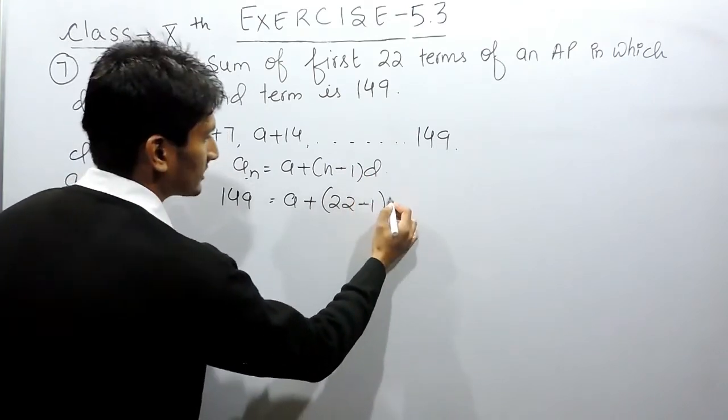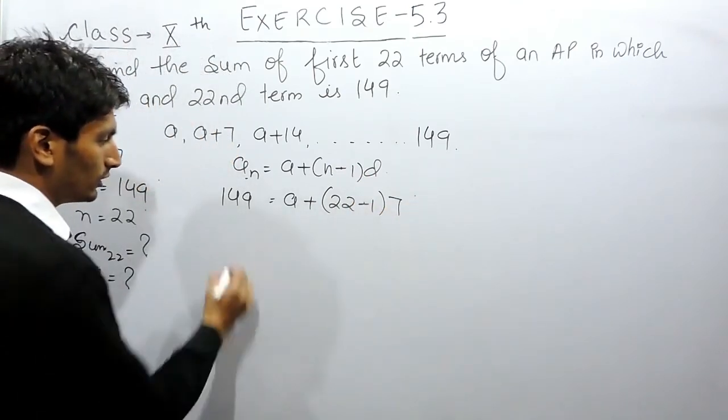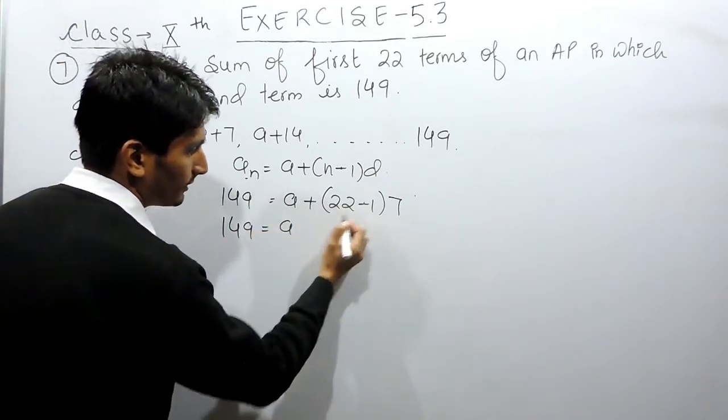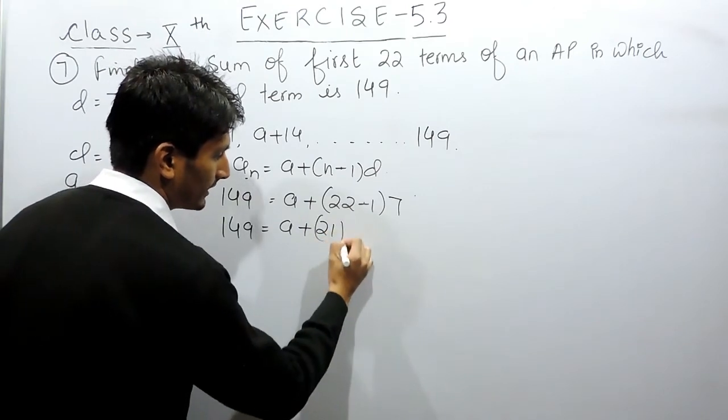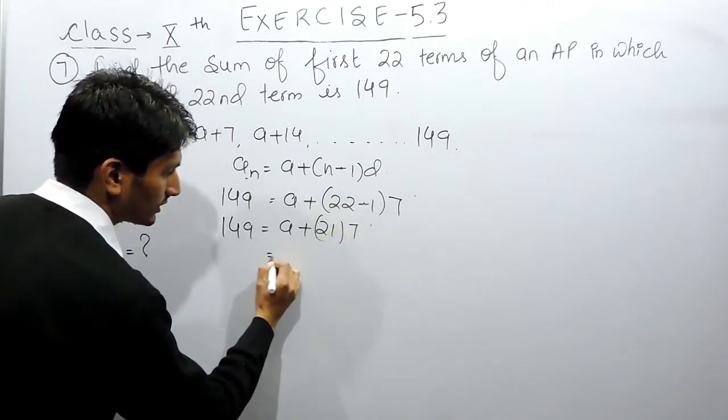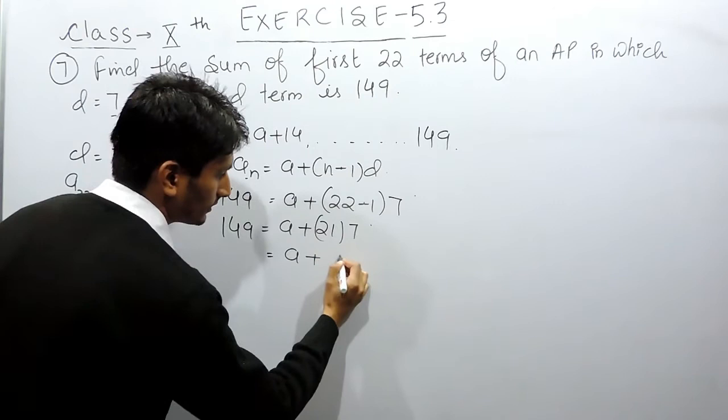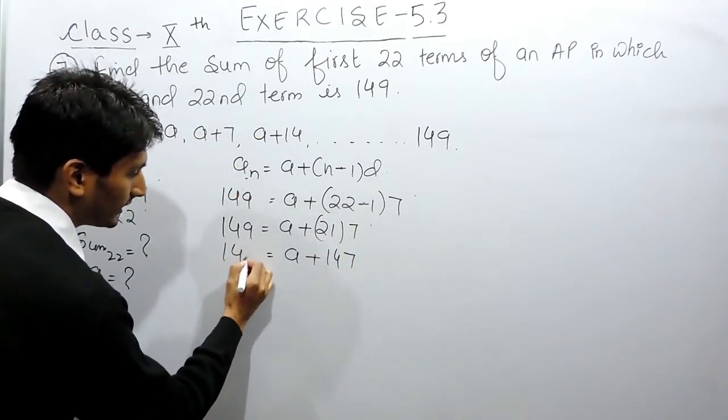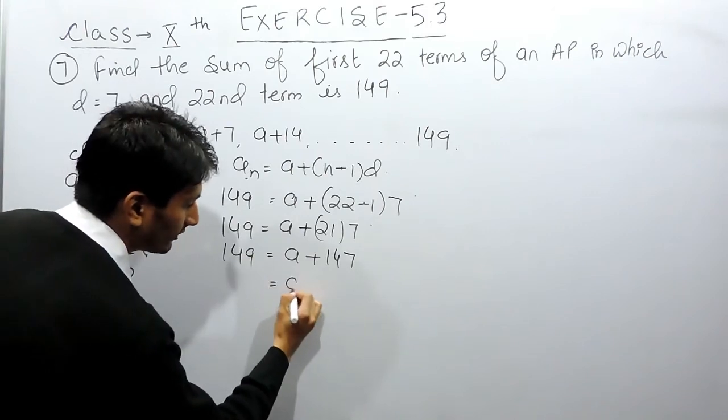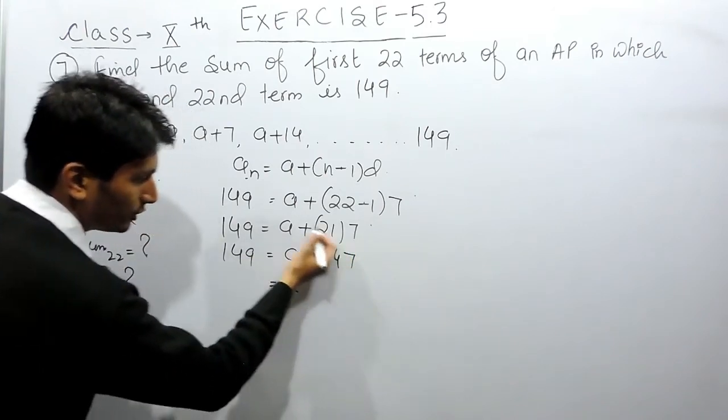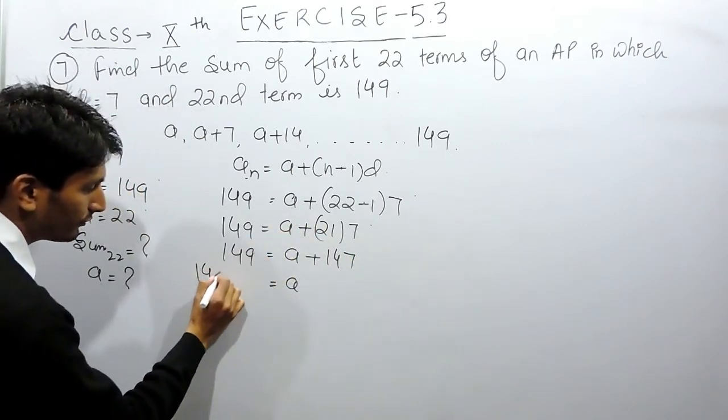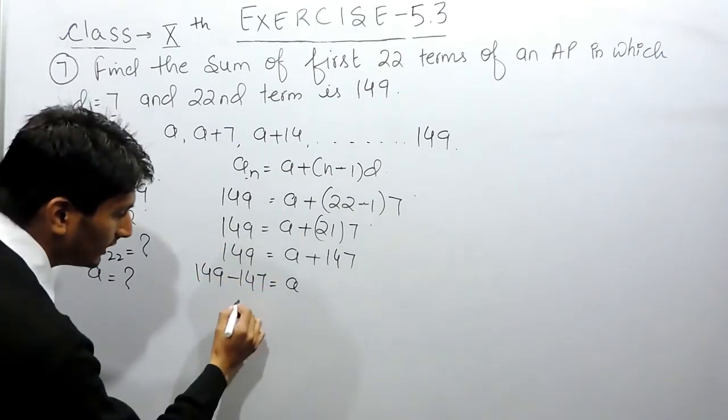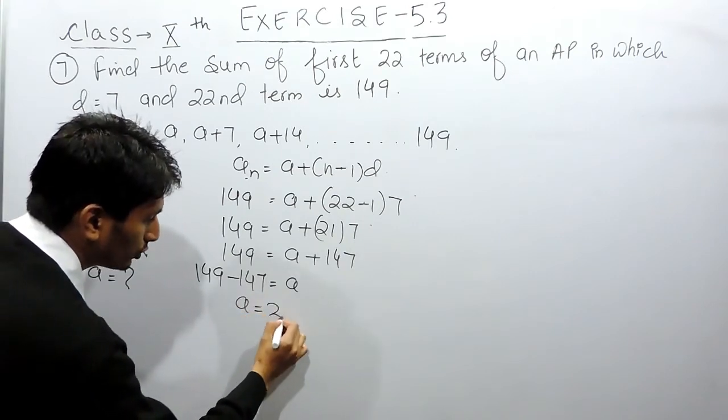The common difference is given as 7, so this will be 149 = a + 21 × 7. This becomes a + 147 = 149. If I have to calculate the value of a, I can shift 147 to the other side, so 149 - 147 means the value of a must be equal to 2.